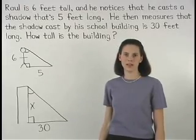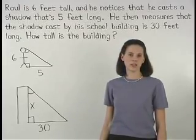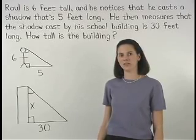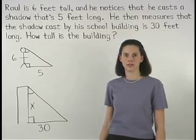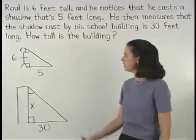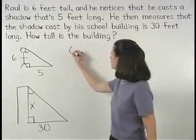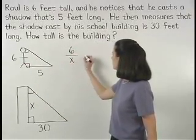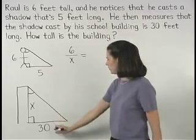So the triangles are similar by the angle-angle similarity postulate. And remember that if two triangles are similar, then the lengths of the corresponding sides are in proportion. So we can set up the proportion 6 is to X as 5 is to 30.